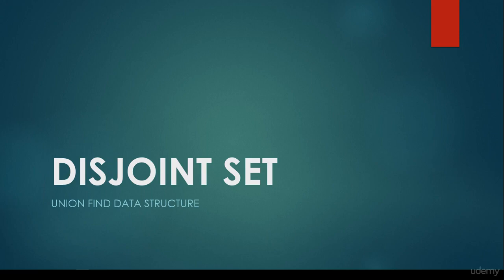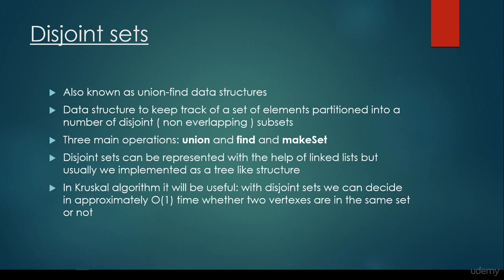In this video we are going to talk about the theoretical background for the so-called disjoint set or the union-find data structure. It is also known as the union-find data structure, and it is a data structure to keep track of a set of elements partitioned into a number of disjoint, so non-overlapping subsets.